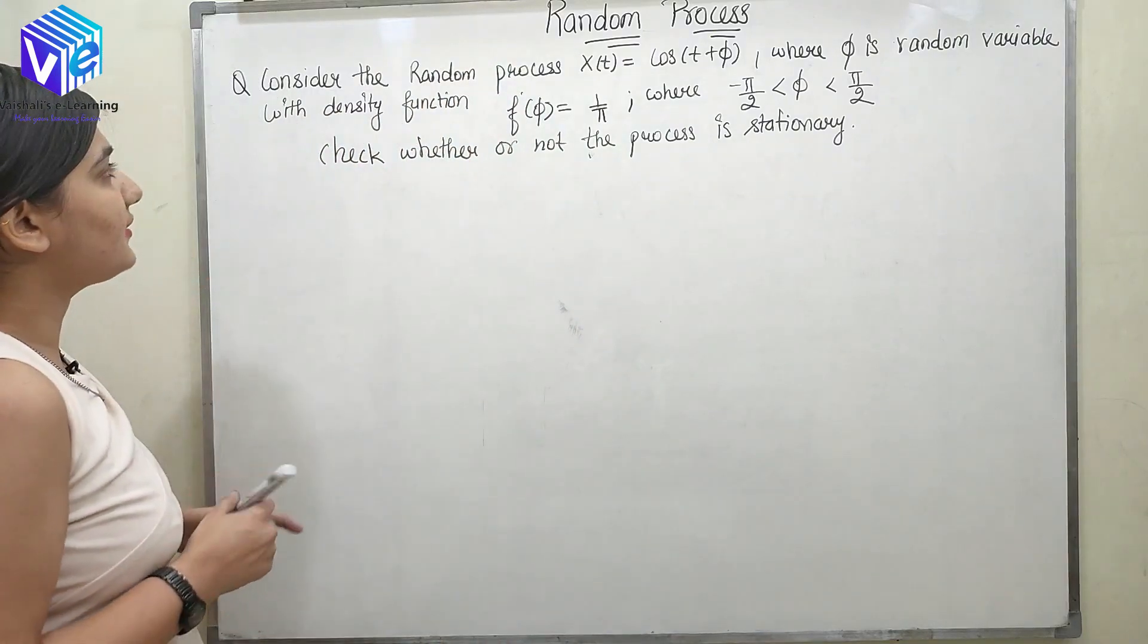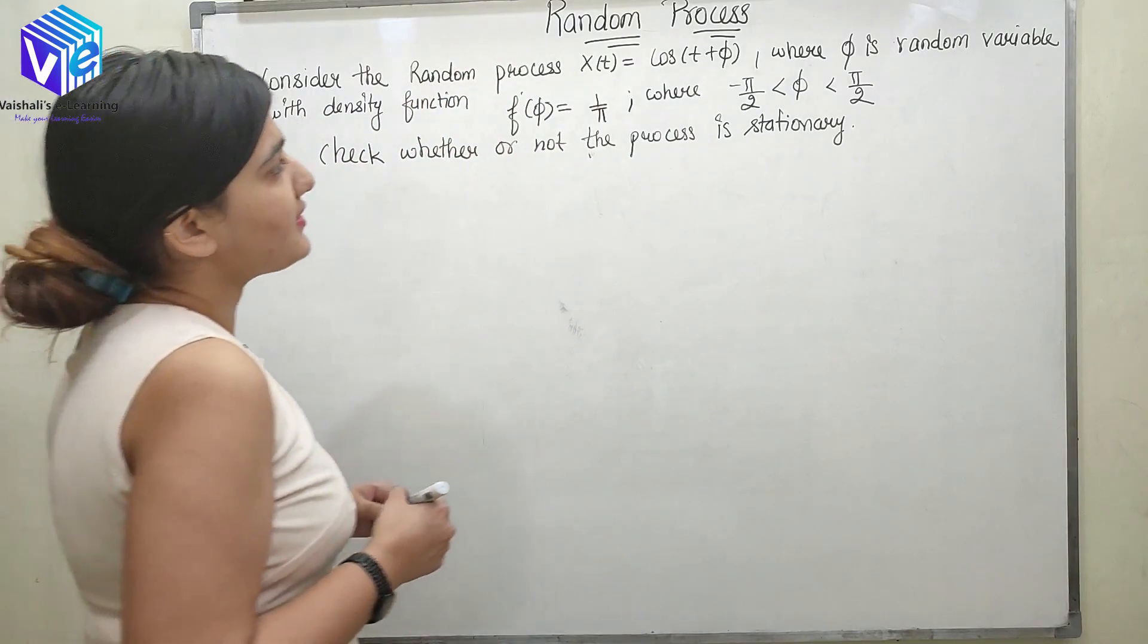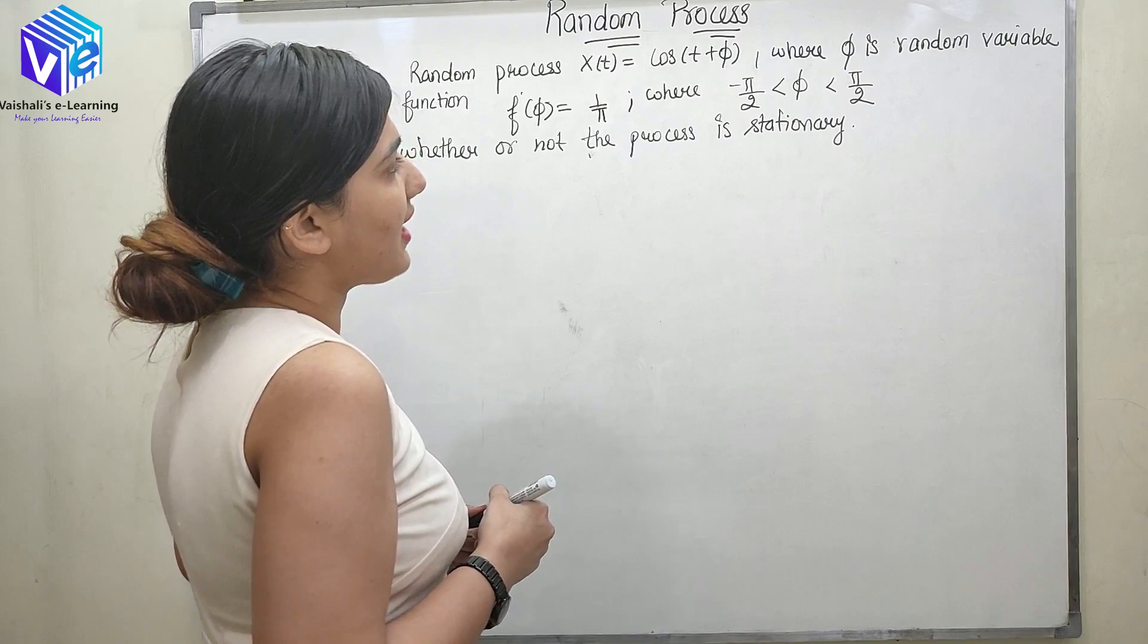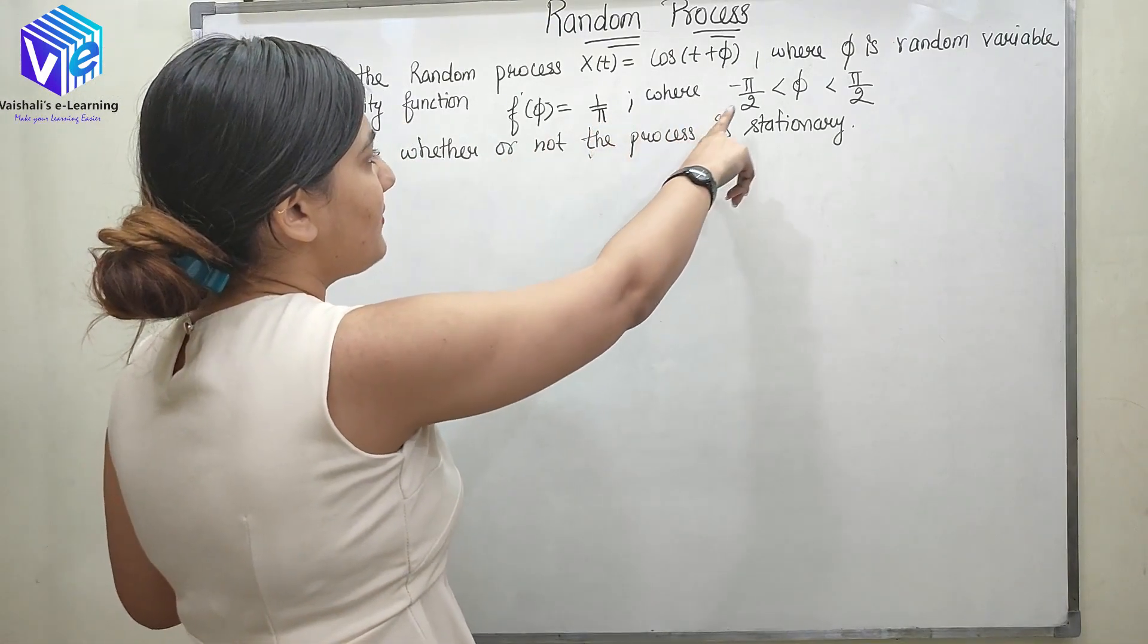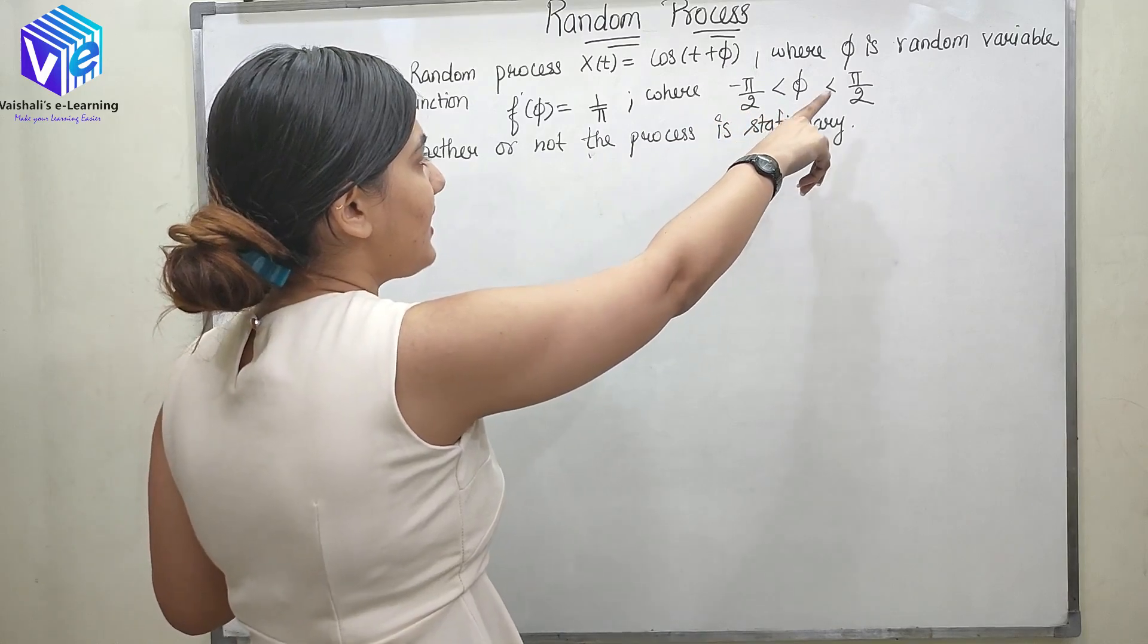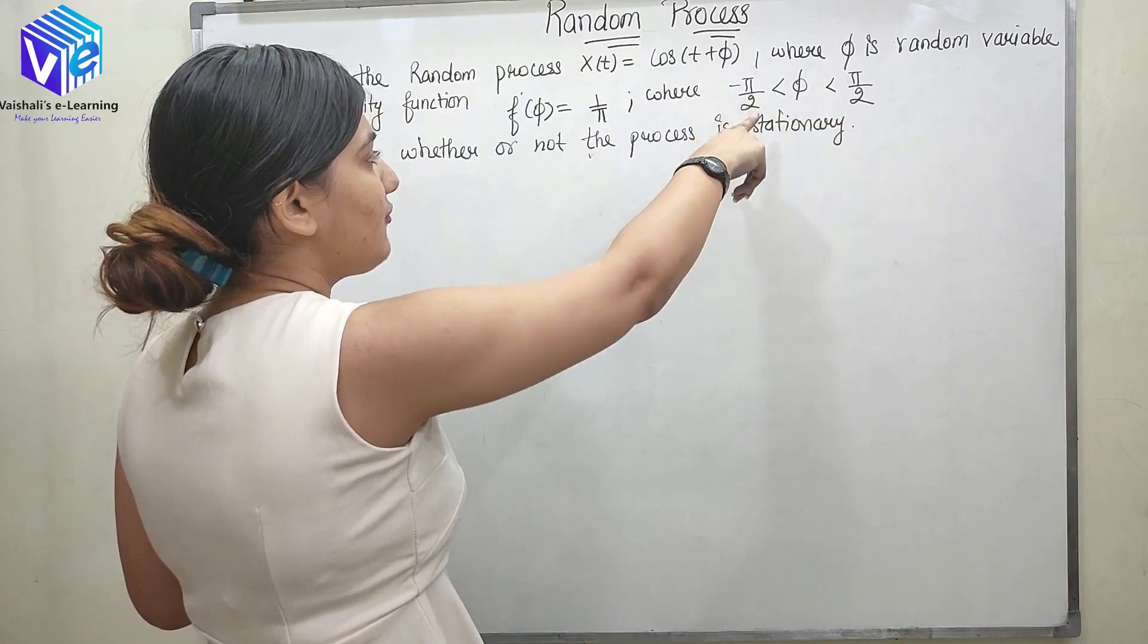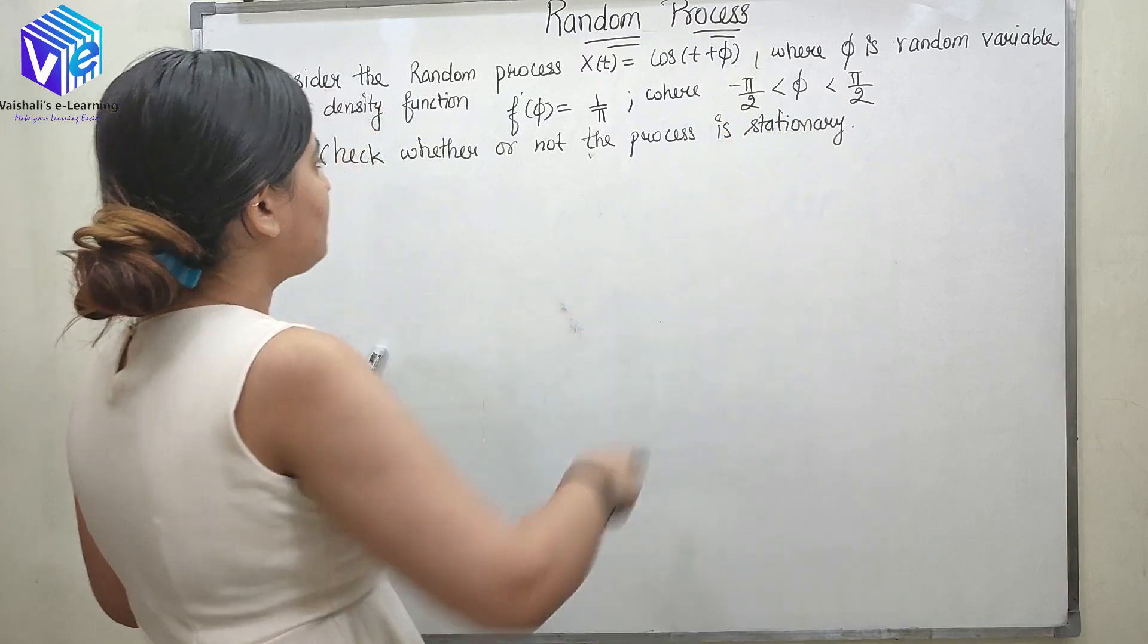The question states that consider the random process X(t) = cos(t + φ) where φ is the random variable with density function f(φ) = 1/π where -π/2 < φ < π/2. So φ is in the range minus π/2 to π/2.